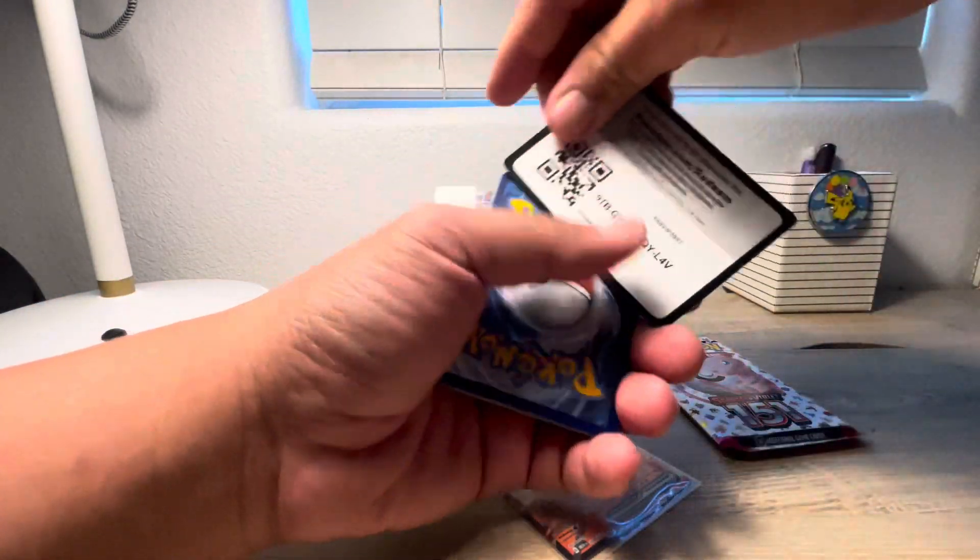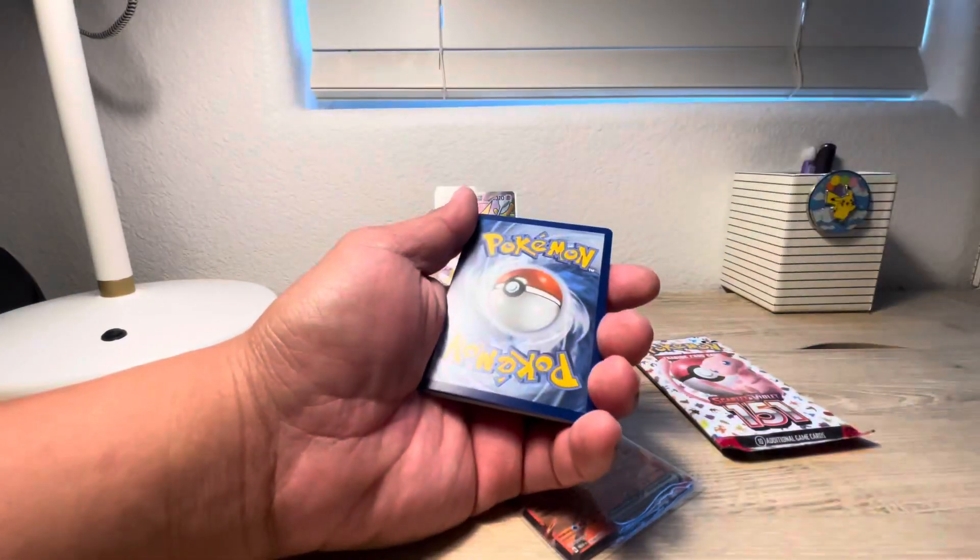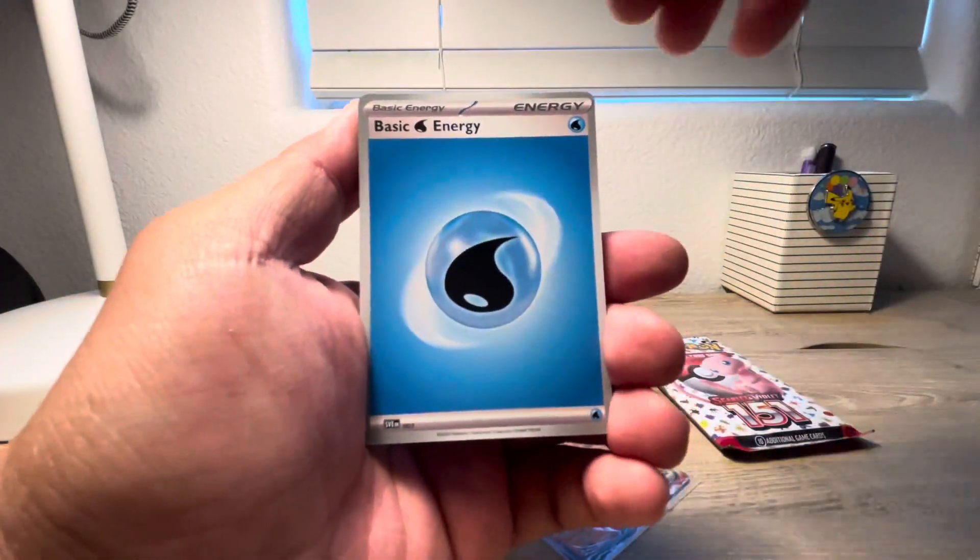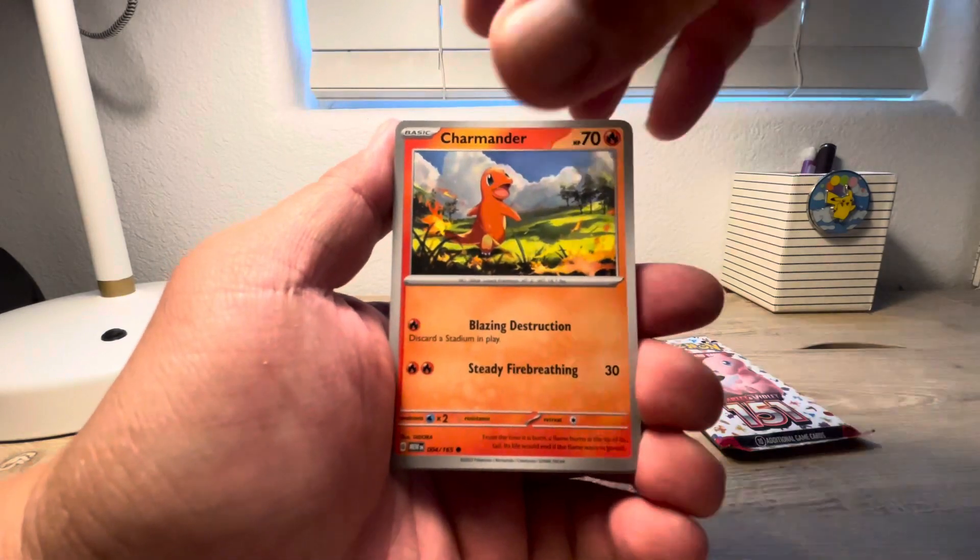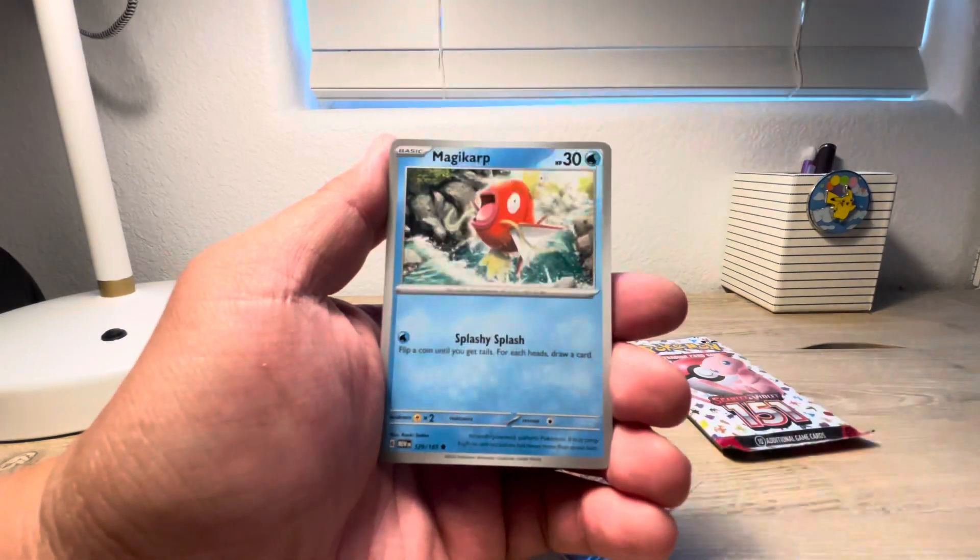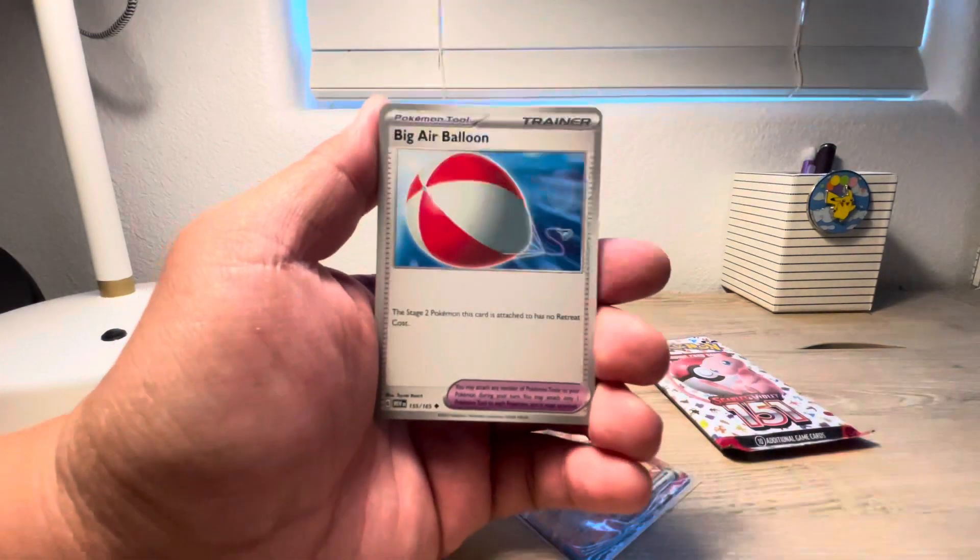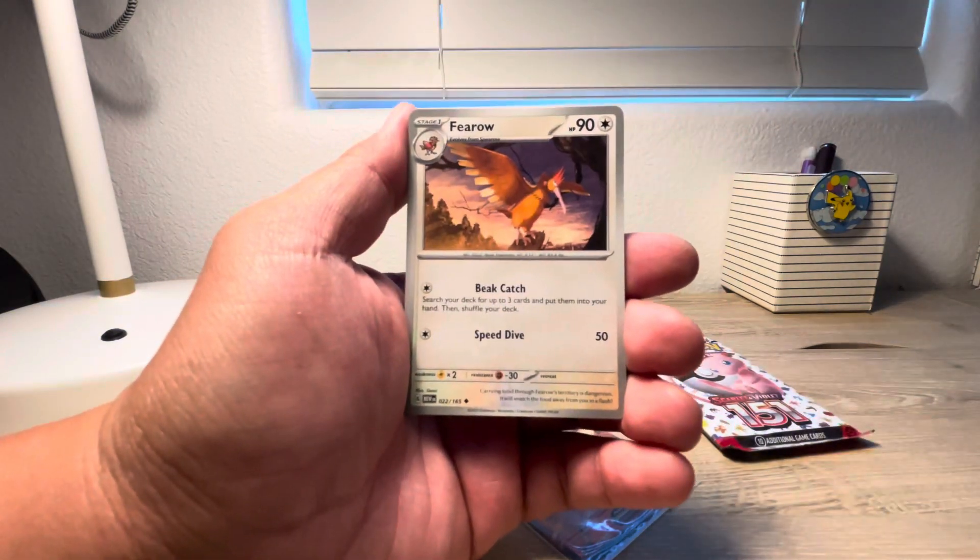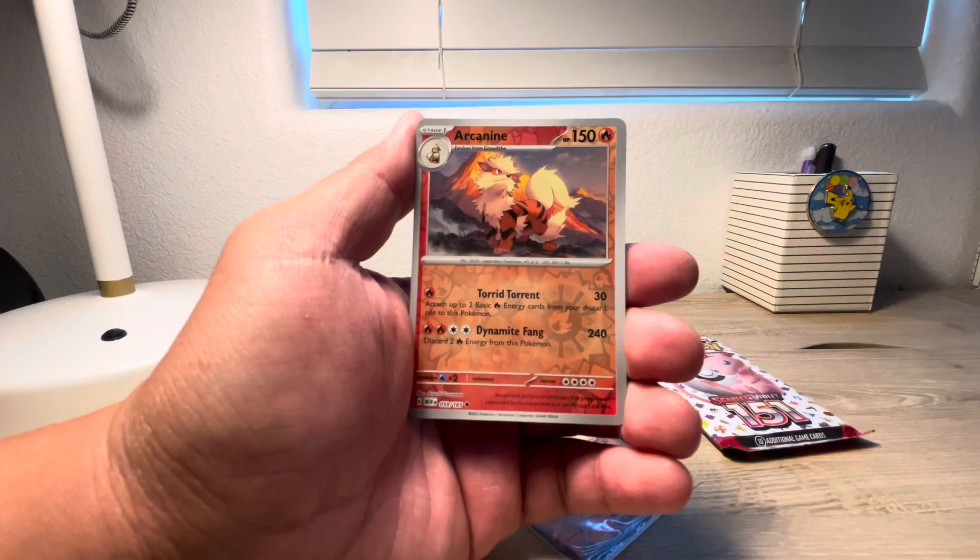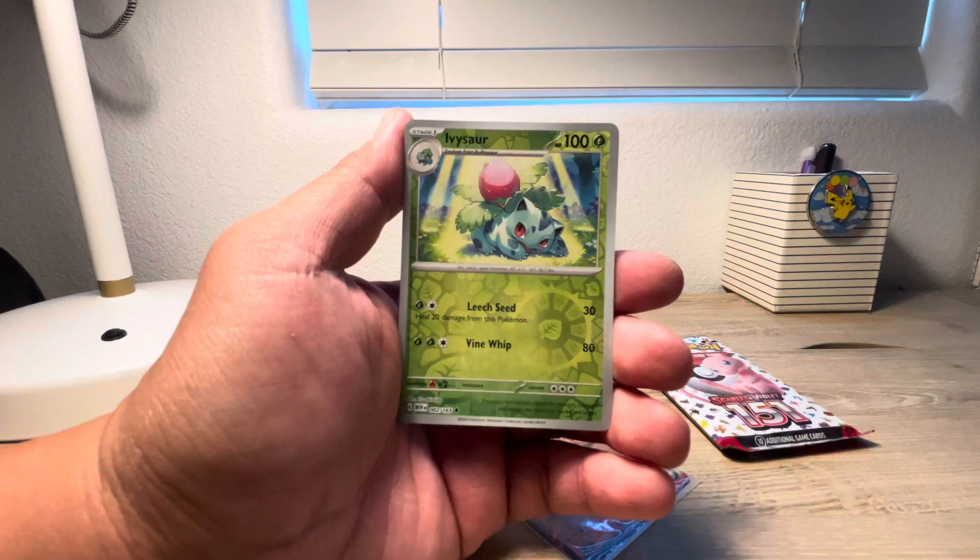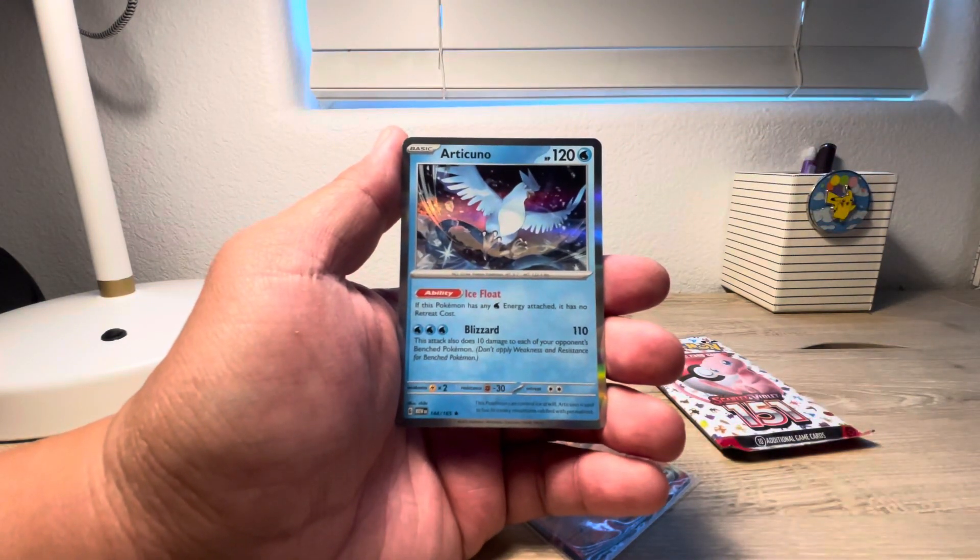Code card for you guys. Water energy. Charmander. Spearow. Rhyhorn. Magikarp. Big Air Balloon Trainer. Primeape. Fearow. Arcanine Reverse. That looks cool. Ivysaur Reverse. Nice. And Articuno Holo.